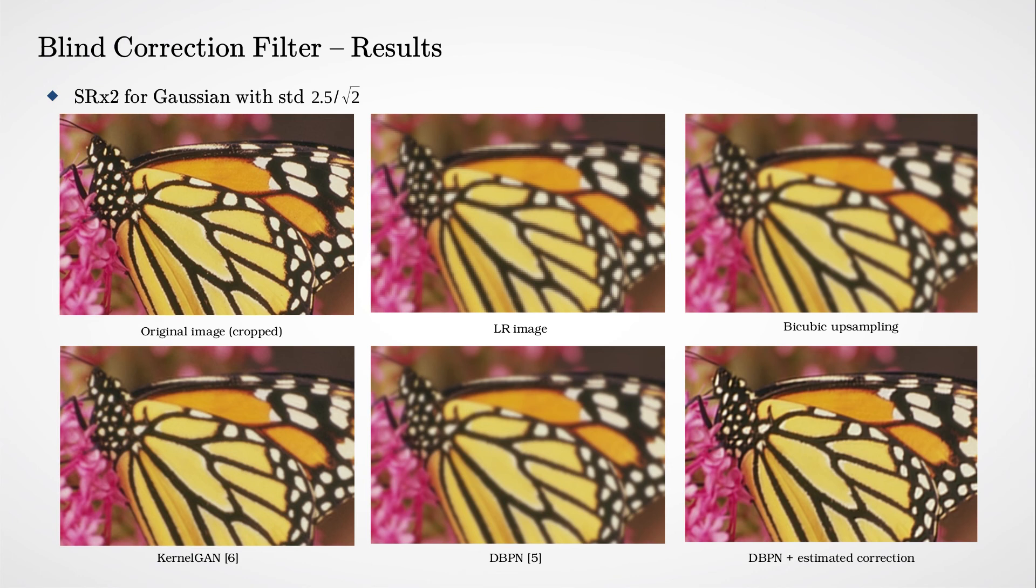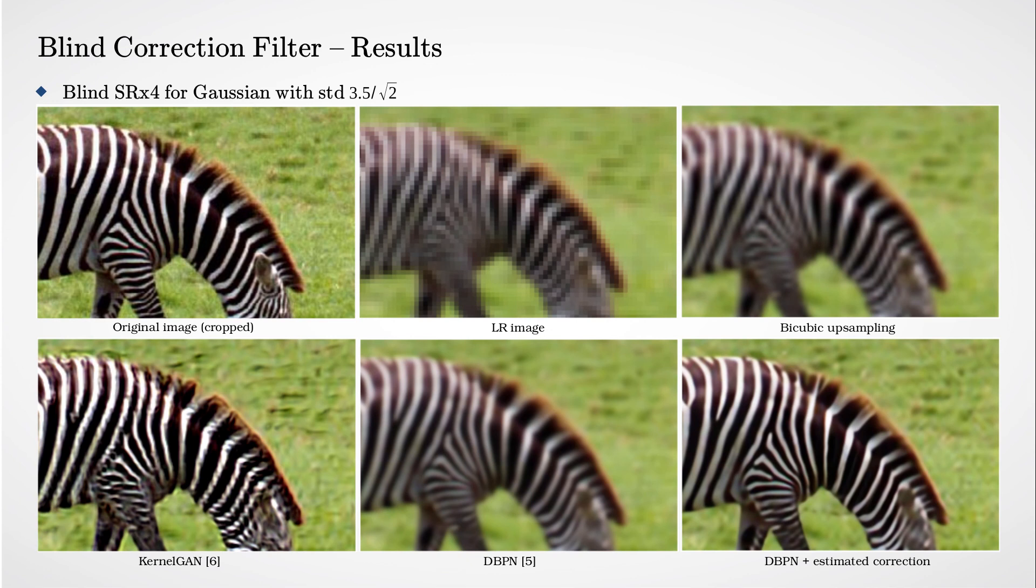Here we see an example that demonstrates the blind super-resolution performance on a non-bicubic degraded image. We see that we outperform KernelGAN, which is a recent method based on adversarial learning for blind super-resolution. Similarly, we see significant improvement in our method compared to others also in the scale factor of 4.